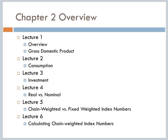In lecture two, we'll talk a little bit about consumption, and we'll go into a little more detail of the consumption function than what is actually covered within this chapter. Then in lecture three, we'll talk about investments, and we'll go into a little more detail about the investment function than what's in the chapter. In lecture four, we'll differentiate between real and nominal variables. Then in lecture five, we'll talk further about the chain weighted versus the fixed weighted index numbers, and we're going to go into a bit more detail than what the chapter does.